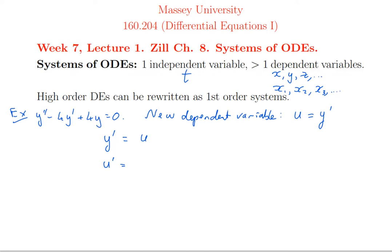What about u prime, the new variable? Well u prime, differentiate both sides of this equation, u prime must be y double prime. But I know what y double prime is from the differential equation, it's 4y prime minus 4y. And I know what y prime is in terms of my new variable is just u. So I get 4u minus 4y. So u prime is 4u minus 4y.